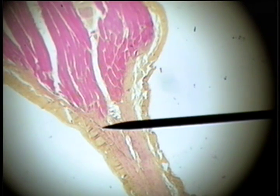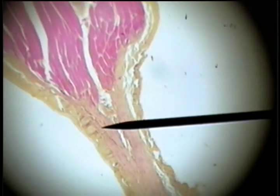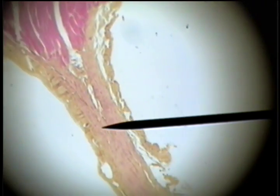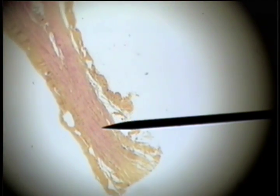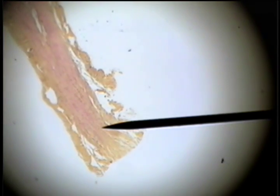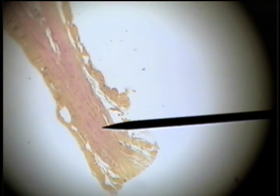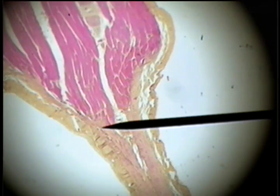Another connective tissue found in the human body is dense regular collagenous. These are inelastic fibers of protein that make for a very strong inelastic structure. An example here is the tendon.